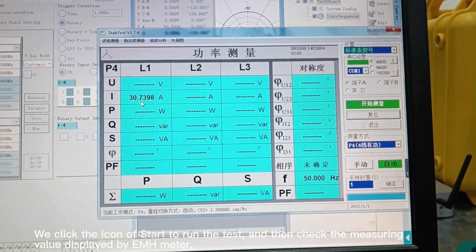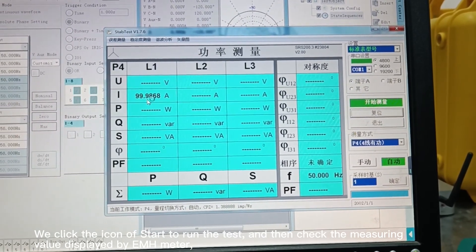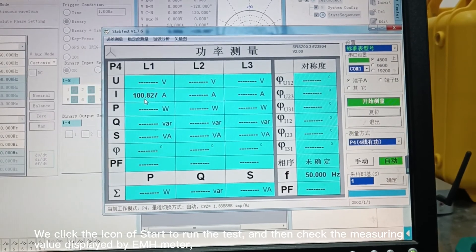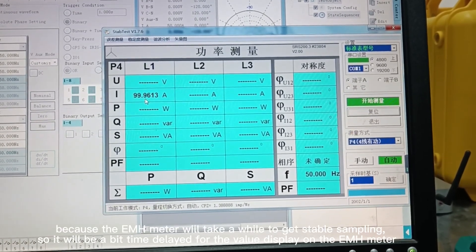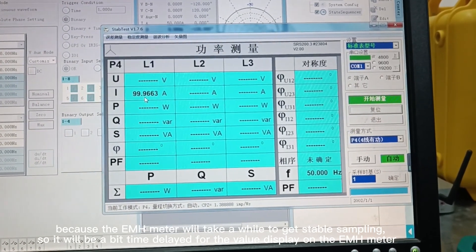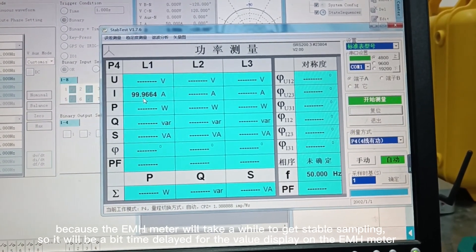We click the icon to start running the test, and then check the measuring value displayed by the EMH meter. Because the EMH meter will take a while to get stable sampling, there will be a bit of time delay for the value displayed on the EMH meter.